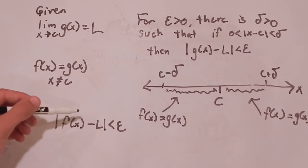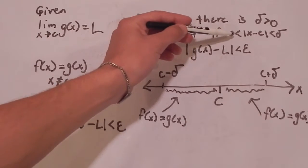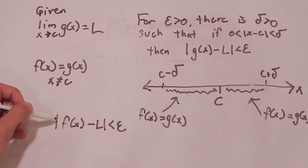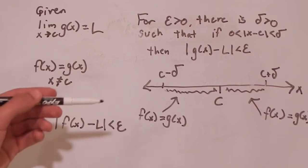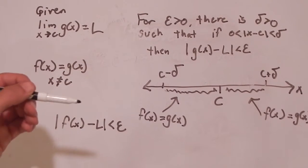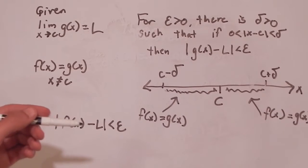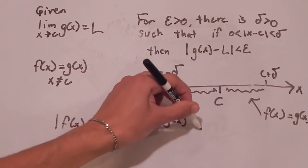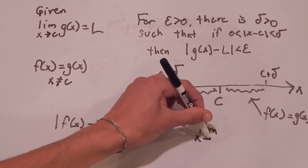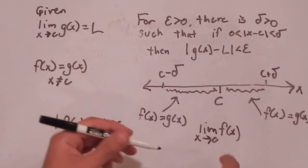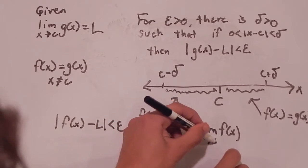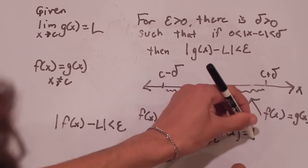So because when this inequality is true, this inequality is true, that is what is necessary to prove that a limit exists. So we can say that the limit as X approaches C of F of X is equal to L.